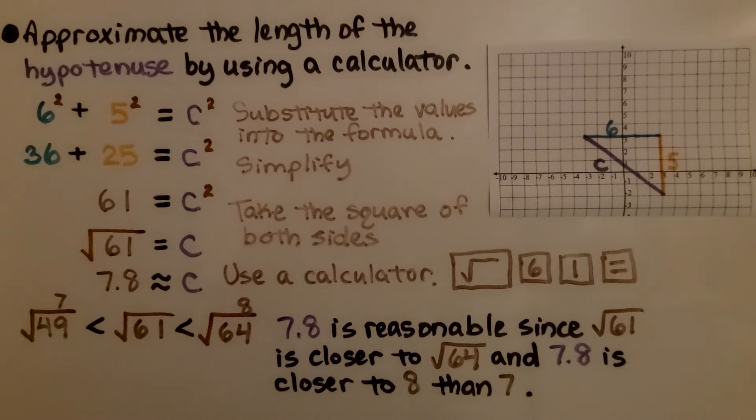We can check it for reasonableness. 7.8 is reasonable since the square root of 61 is closer to the square root of 64 and 7.8 is closer to 8 than to 7. The square root of 61 is between the perfect squares of the square root of 49 and the square root of 64, which means it's between 7 and 8, but 61 is much closer to 64, so 7.8 is closer to 8, and that's reasonable.